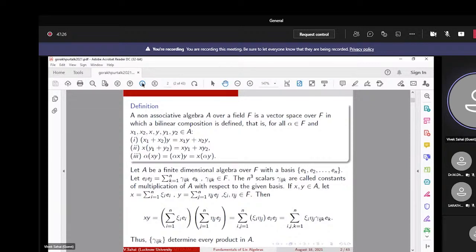The definition goes like this: a non-associative algebra A over a field F is a vector space in which a bilinear composition is defined.